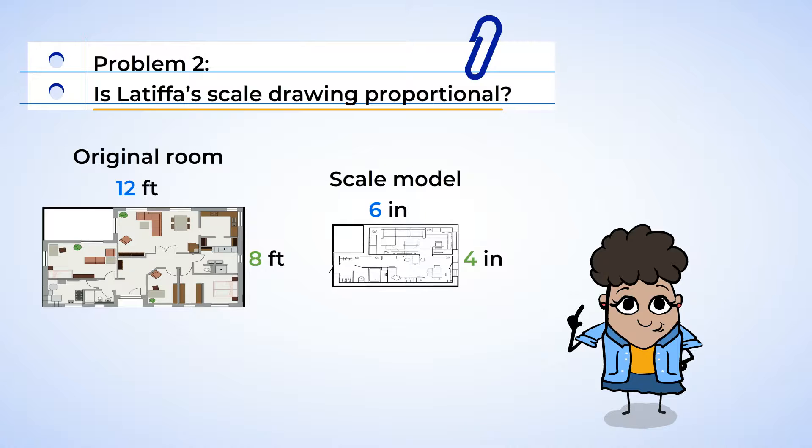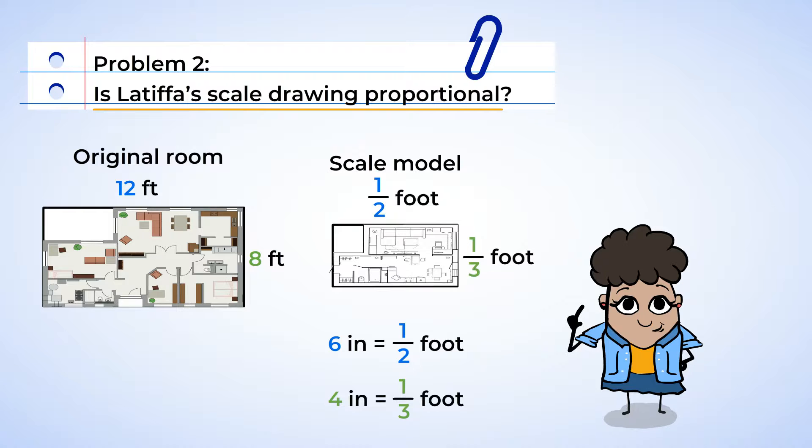Before we can compare these measurements, we will need to convert them to the same unit. 6 inches is the same as 1 half of a foot. 4 inches is equal to 1 third of a foot. Now that we have the same units, we can look at the relationship between the numbers. How does 12 become 1 half? And how does 8 become 1 third?